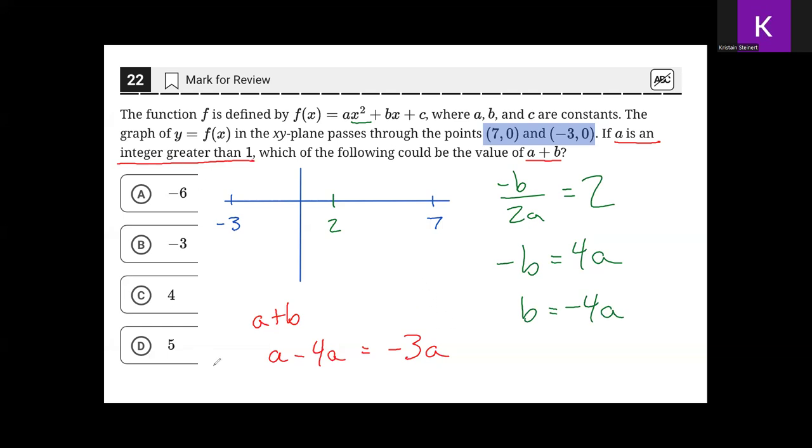Of the answer choices, the only one that can be attained if a is an integer greater than 1 is -6. If a = 2, then -3 × 2 = -6, which does yield answer choice A.